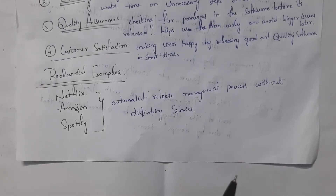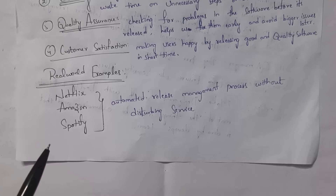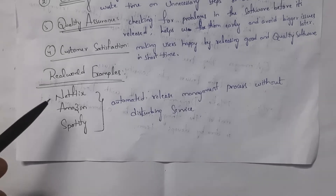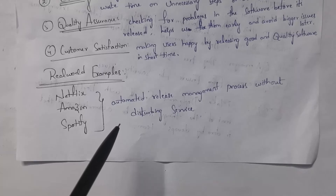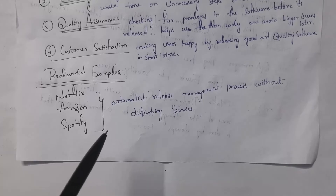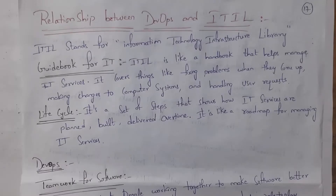Popular companies using automated release management without disturbing services include Netflix, Amazon, and Spotify. For example, Netflix releases new content daily without disturbing any existing service.